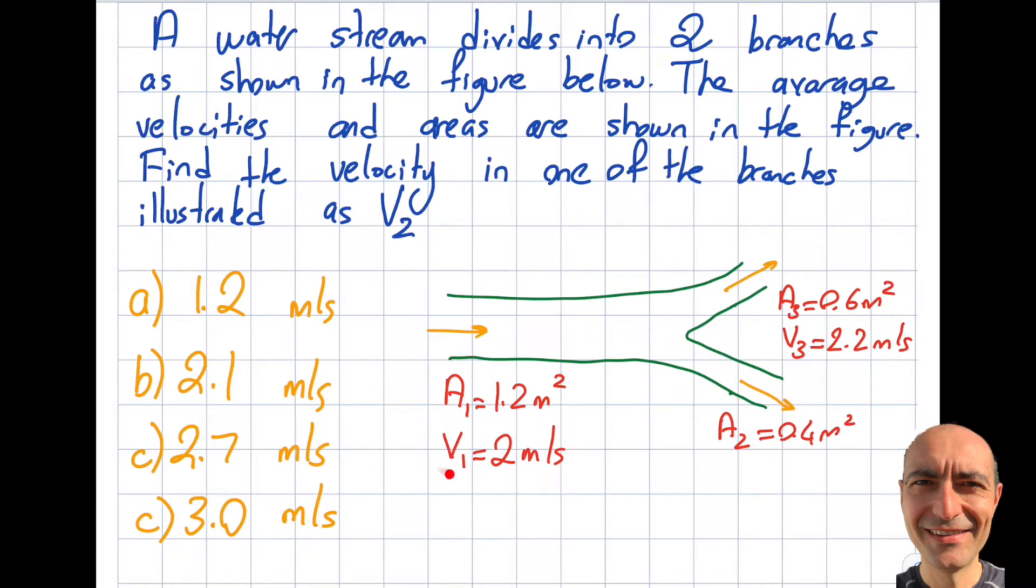The areas and average velocities are supplied except that V2 is missing. The question is asking me what is this V2, and these options are right over here.